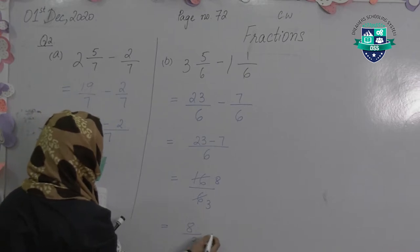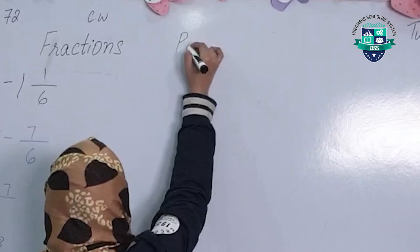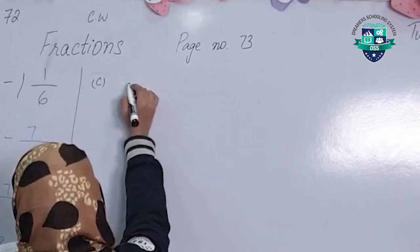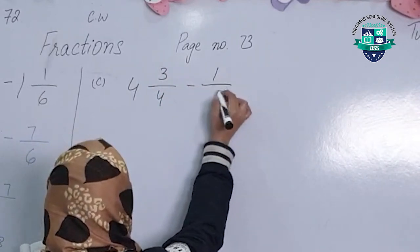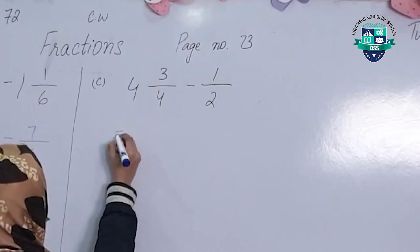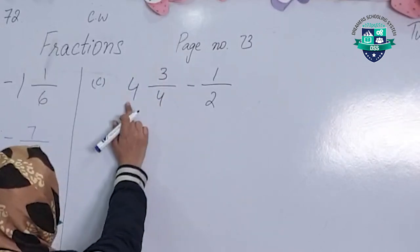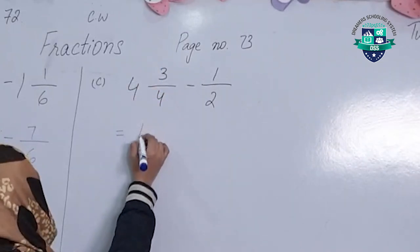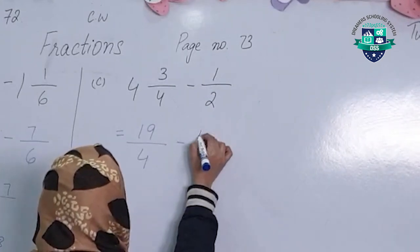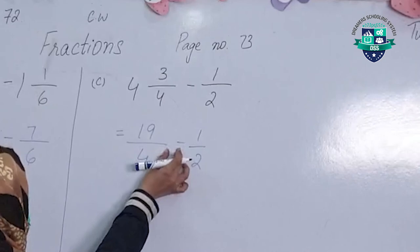I will do one more question for you and you will solve the rest by yourself. Page number 73, part C: 4 whole 3 by 4 minus 1 by 2. First we will change the mixed number into an improper fraction. The denominator multiplied by the whole number: 4 fours are 16, 16 plus 3 is 19, so the improper fraction is 19 by 4. Minus 1 by 2. Now the denominators are not equal, we have to make them equal and then subtract.